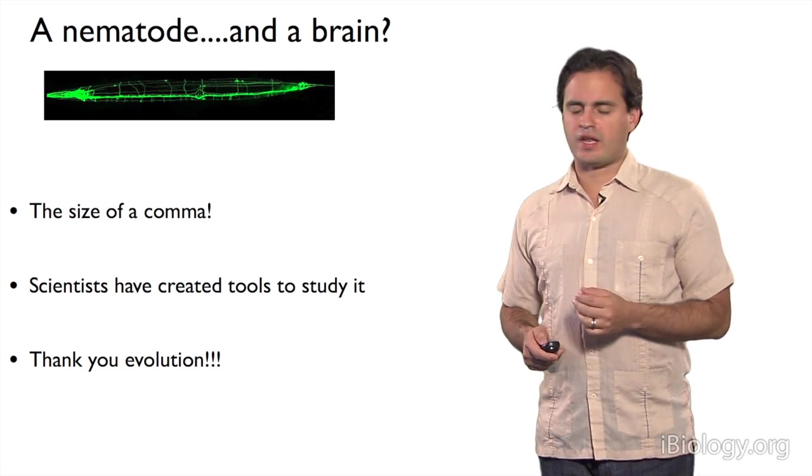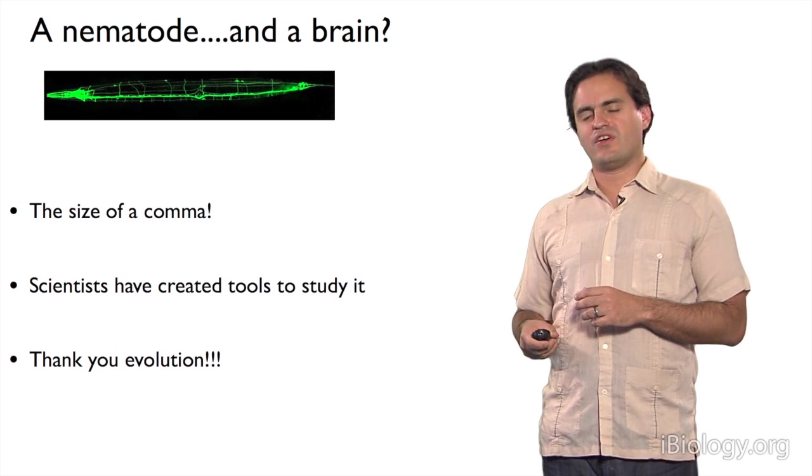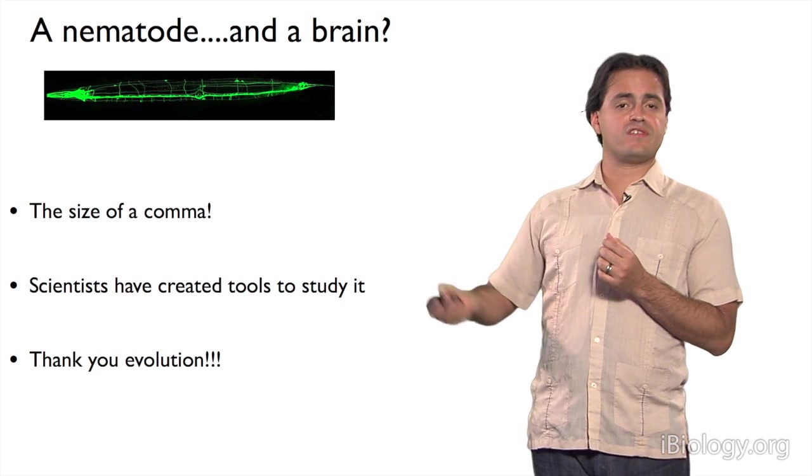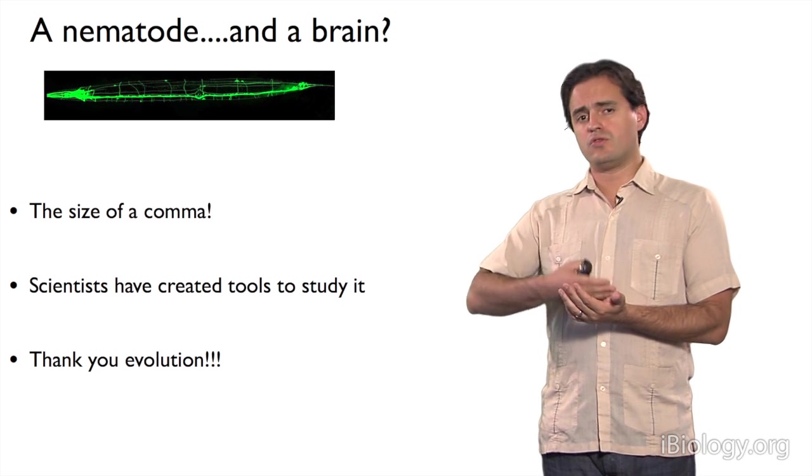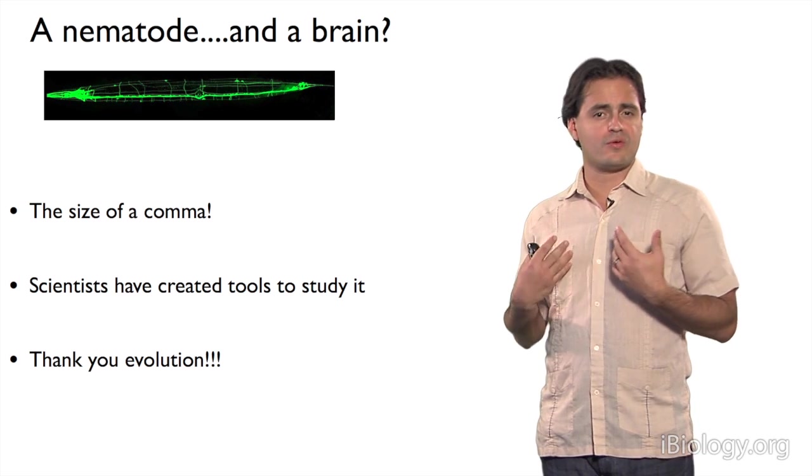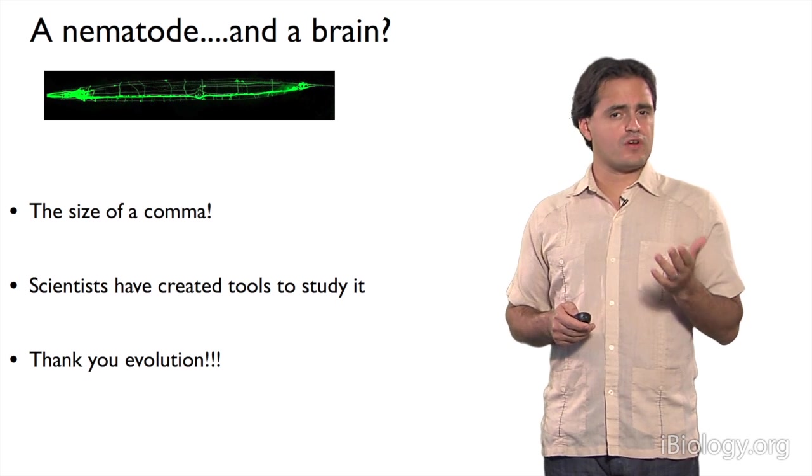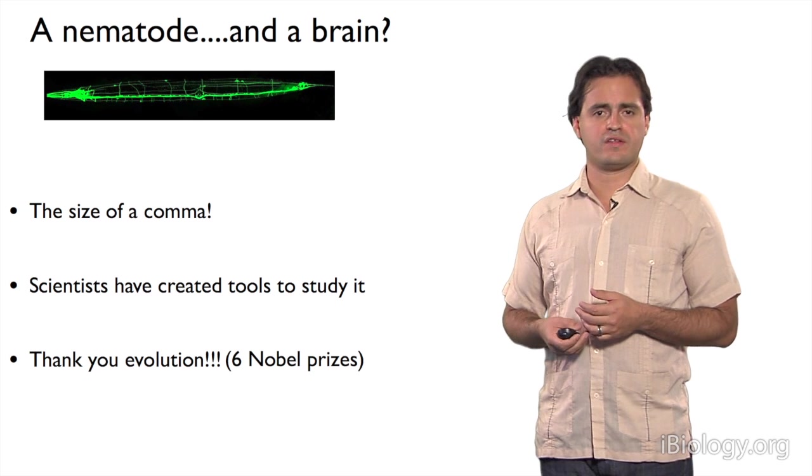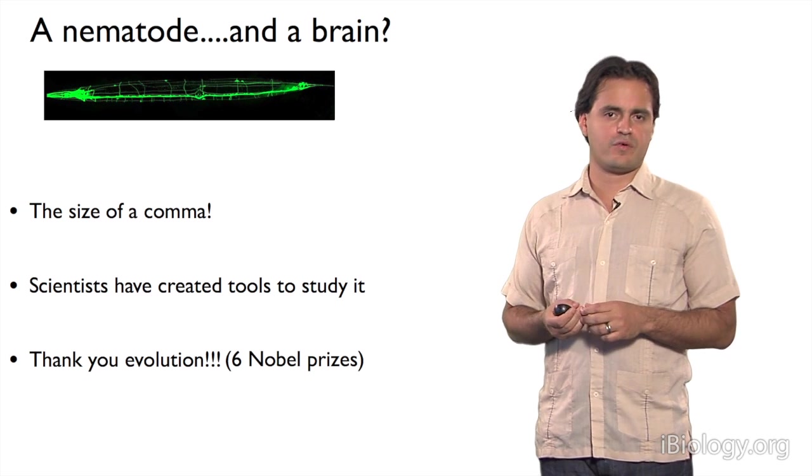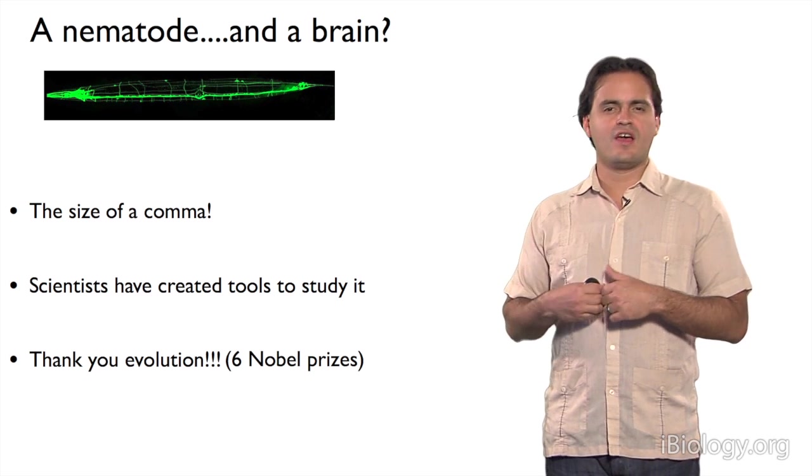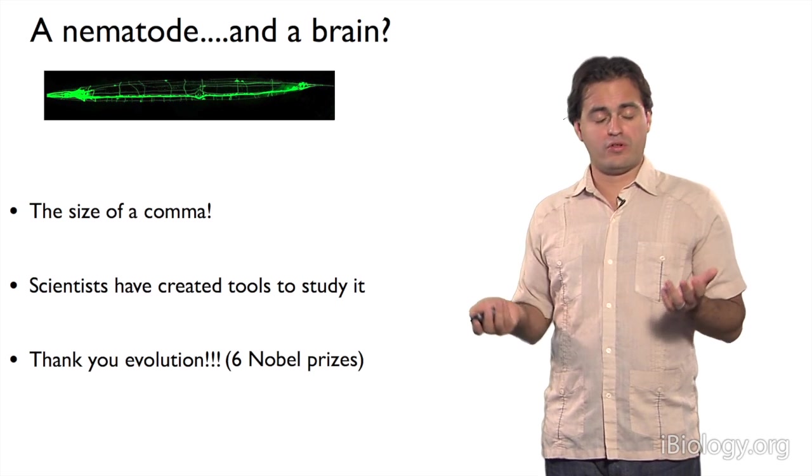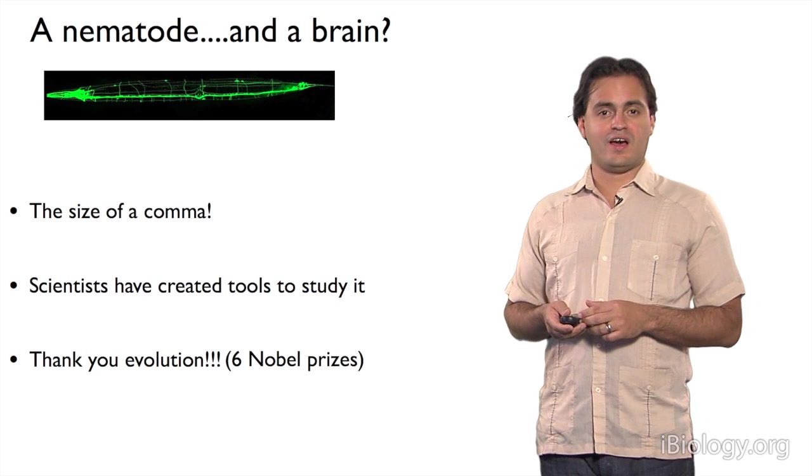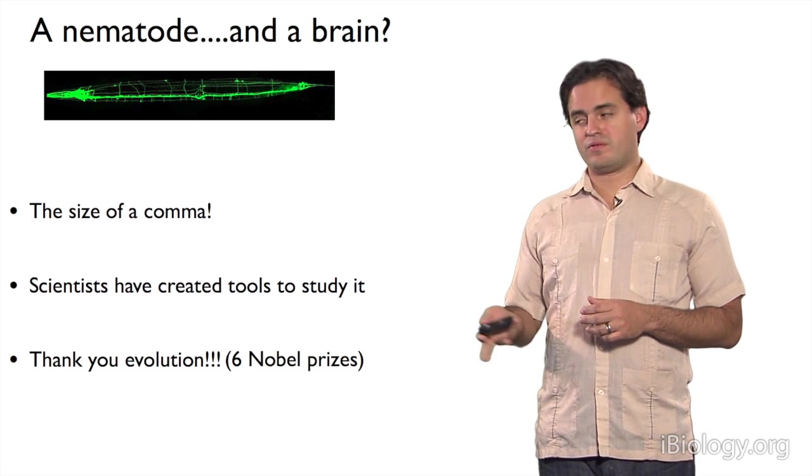Why is that knowledge important? The reason that knowledge is important is because of evolution. It's thanks to evolution that a lot of the concepts that we find in C. elegans are actually applicable to other organisms, to other animals, including ourselves. So much so that in the past 10 years, six Nobel Prizes have been awarded for people working in C. elegans that have made fundamental discoveries which were then widely applicable to other systems, which furthered our general knowledge of how biology works.